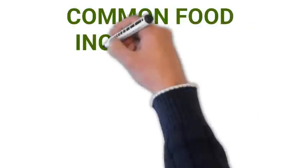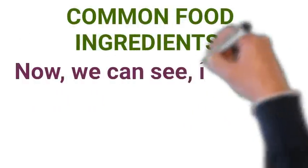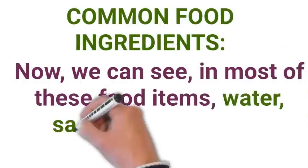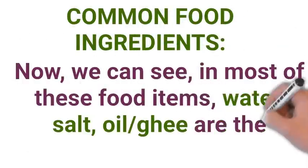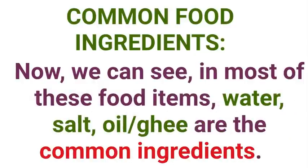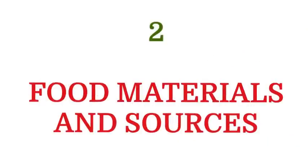Now, we can see that in most of these food items, water, salt, and oil or ghee are the common ingredients. Next, we come to the heading: Food Materials and Sources.